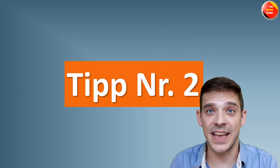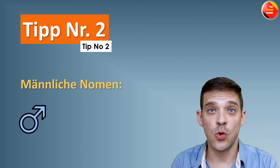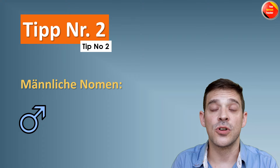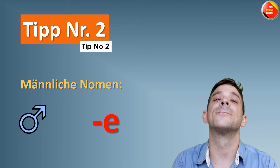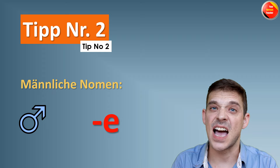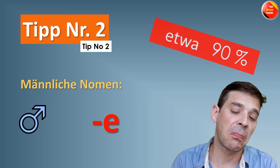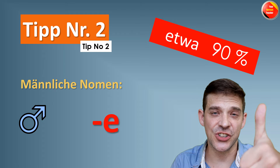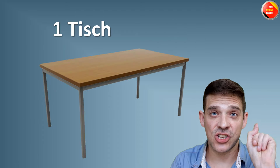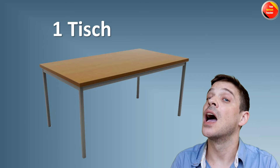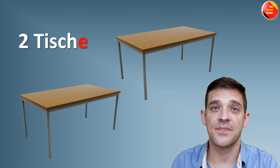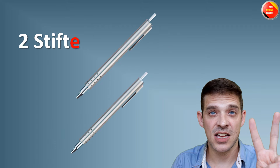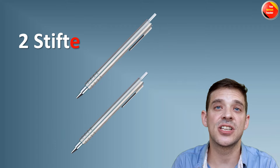Tipp number zwei — männliche Nomen, masculine nouns. What do you do? You add E, and you're going to be fine in around 90%. Zum Beispiel: ein Tisch → zwei Tische. Oder ein Stift → zwei Stifte.